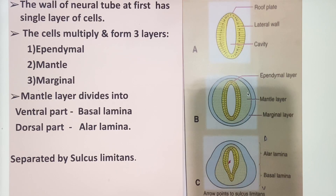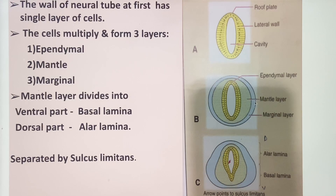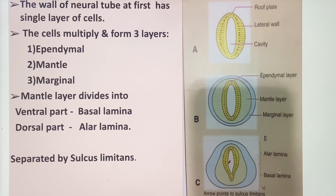Then the multiplication of the cells happens and they are further demarcated into three layers from inner to outer side: the ependymal layer, mantle layer, and marginal layer. The mantle layer is divided into a ventral part called the basal lamina and a dorsal part called the alar lamina, and these two laminae are separated by the sulcus limitans.